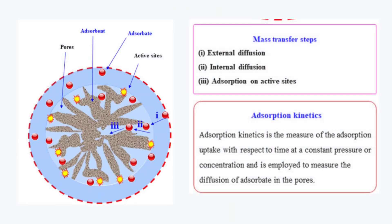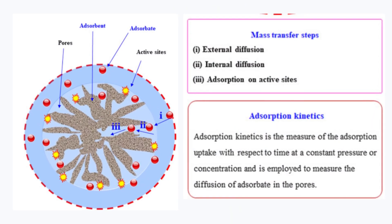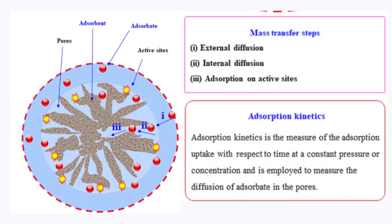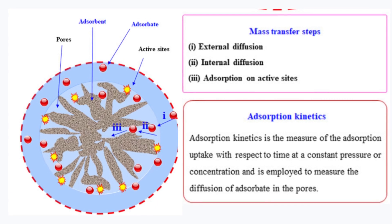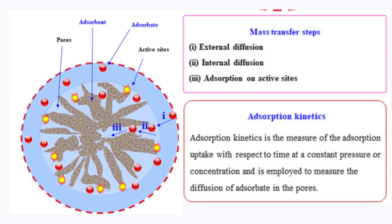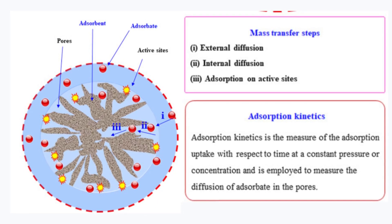Here it has been shown: pores, adsorbent, adsorbate, active sites, and three processes — 1, 2, 3. The first process is external diffusion, the second is internal diffusion, and the third is adsorption on active sites.